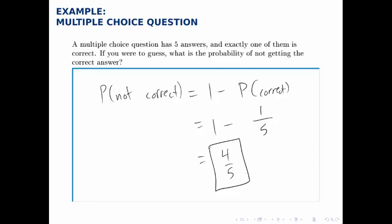And of course we can get to that answer directly by thinking about the fact that if there are five answers and one of them is correct, the other four are not correct. So when you randomly guess, you have four ways to choose an answer that's not correct, five total possibilities to choose from, so that probability is 4 out of 5.